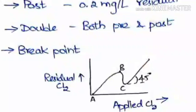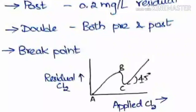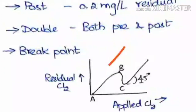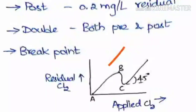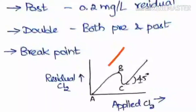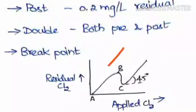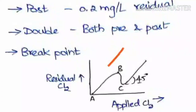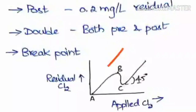In break point chlorination, as chlorine is added it starts consuming and killing bacteria, so residual chlorine increases from point A to B. After killing all the bacteria, the organic matter in the water gets oxidized and residual chlorine falls from B to C. After point C, whatever chlorine is added will remain as residual chlorine only — this point is called the break point, and the graph continues increasing after it.